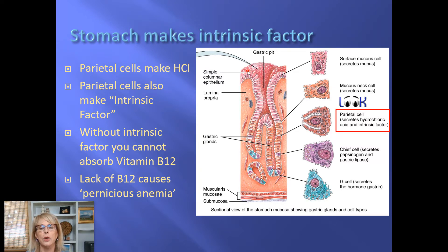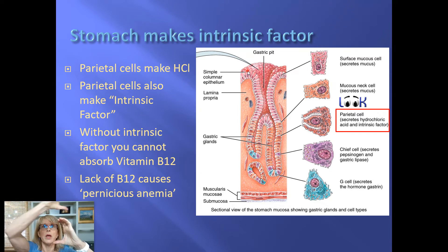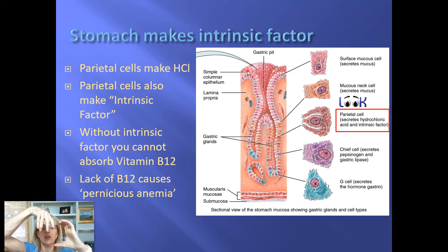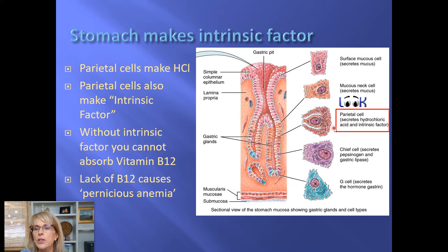The mucus covering the surface of all these cells is one of the things protecting them from the hydrochloric acid inside the stomach. That mucus also contains buffers like bicarbonate. So if there's a layer of mucus with bicarbonate in it, and hydrochloric acid and pepsin start to diffuse into the mucus, the pepsin will get denatured as its pH changes. It's a very effective defense.